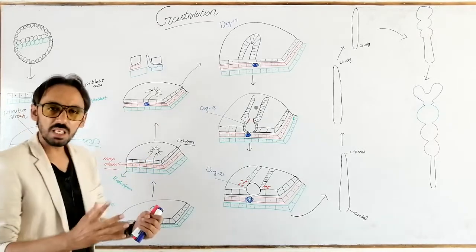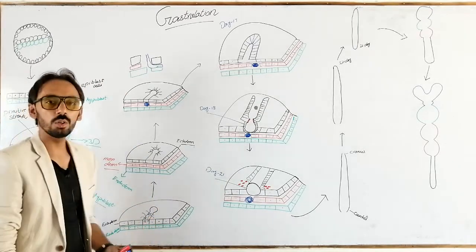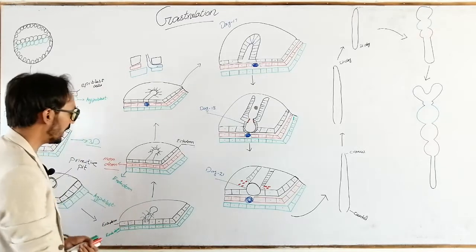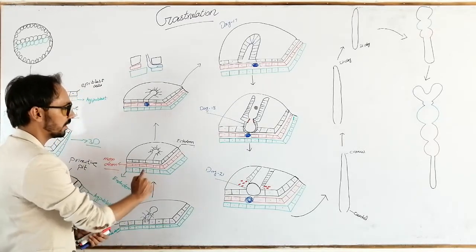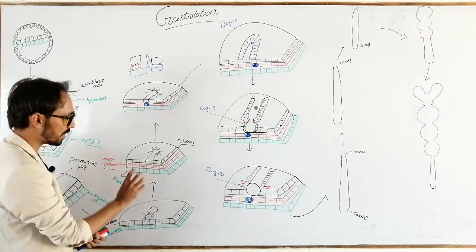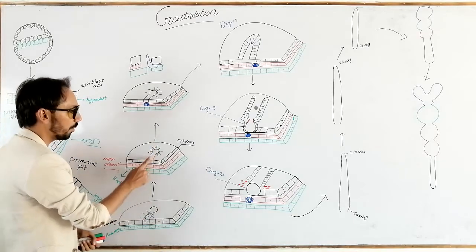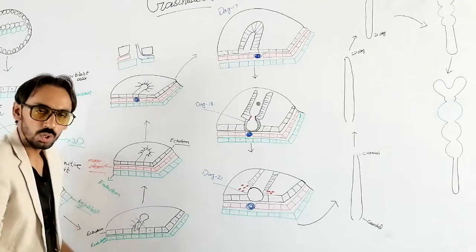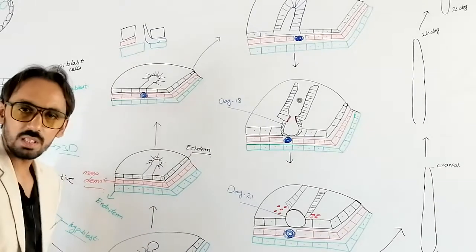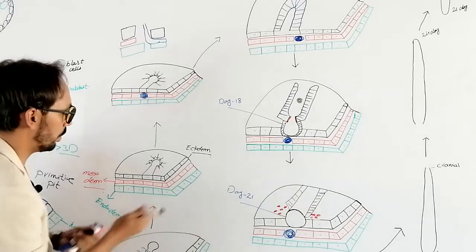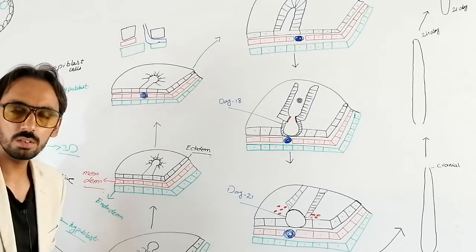But now we are making a beautiful thing called the notochord. In the last lecture, the ectodermal cells migrated through the primitive groove. But now, these ectodermal cells will go deeper inside through the primitive pit.